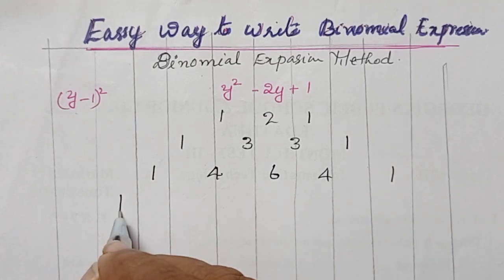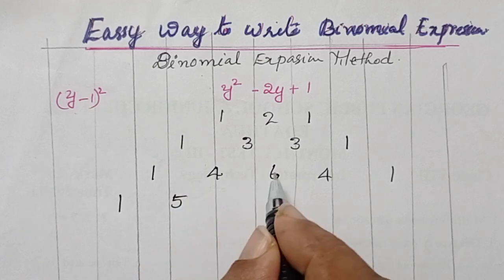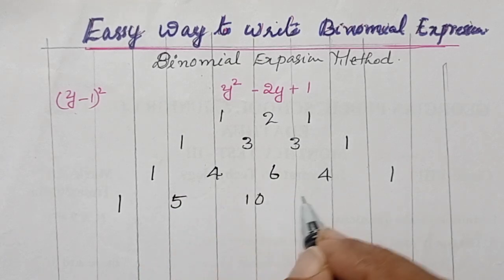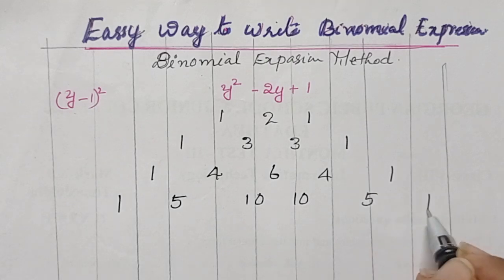Next one, 1 you write here. Adding these 2, you will get 5. 10. 10. 5. Last you write 1.